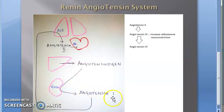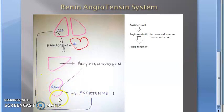Renin is in the kidney, so the kidney converts angiotensinogen into angiotensin 1. The brain gives the stimulus for renin secretion. This happens if there is low blood pressure, low extracellular fluid volume, sympathetic stimulation, or low sodium. All these stimuli will make the kidney release renin, and renin secretion is controlled by the brain only when there is a need.